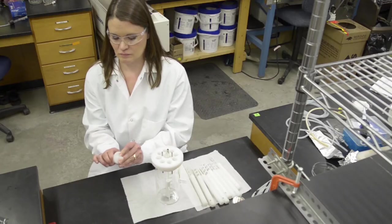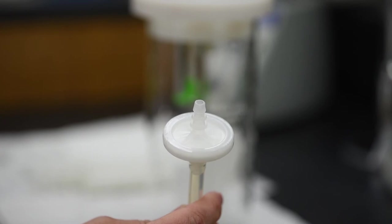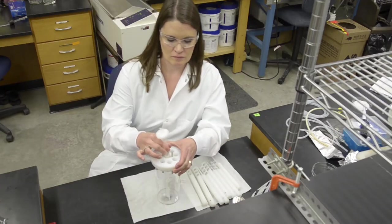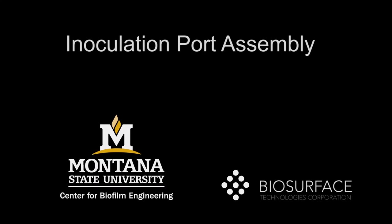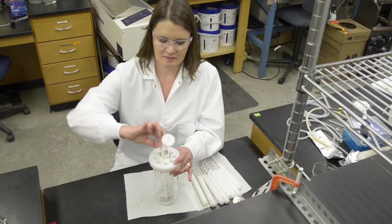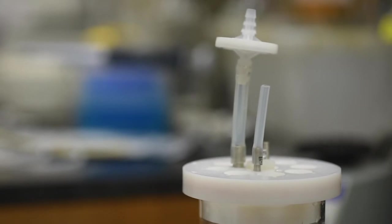Attach a bacterial air vent to a short length of size 18 silicone tubing and attach to reactor top. Attach a short piece of size 16 silicone tubing to the reactor top. This will serve as the inoculation port.